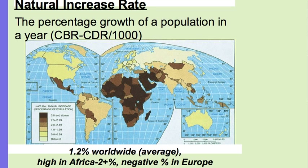The natural increase rate is where you take the crude birth rate and subtract the crude death rate — this is how the population is growing naturally. It's very high in Africa, the Middle East, and parts of Asia, and very low mostly in Europe, North America, and Australia. The world average when this book was written was 1.2%; currently in 2013 it's 1.1%. Typically high in Africa, negative in parts of Europe, and low in North America and Australia.